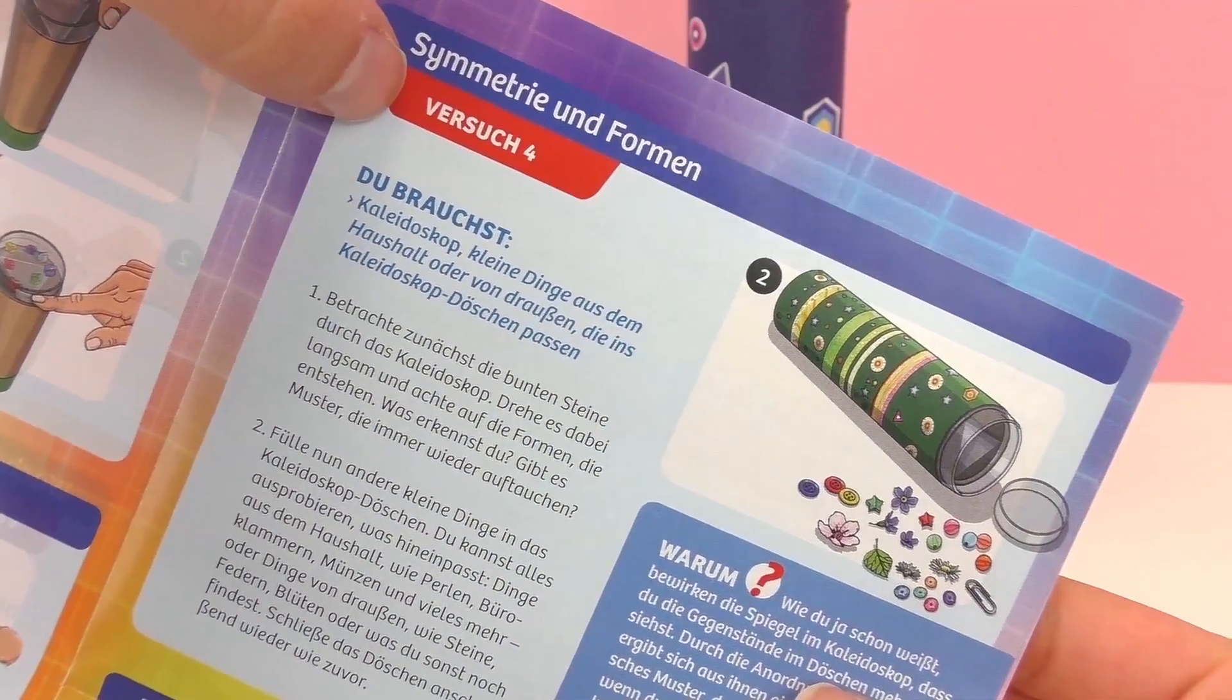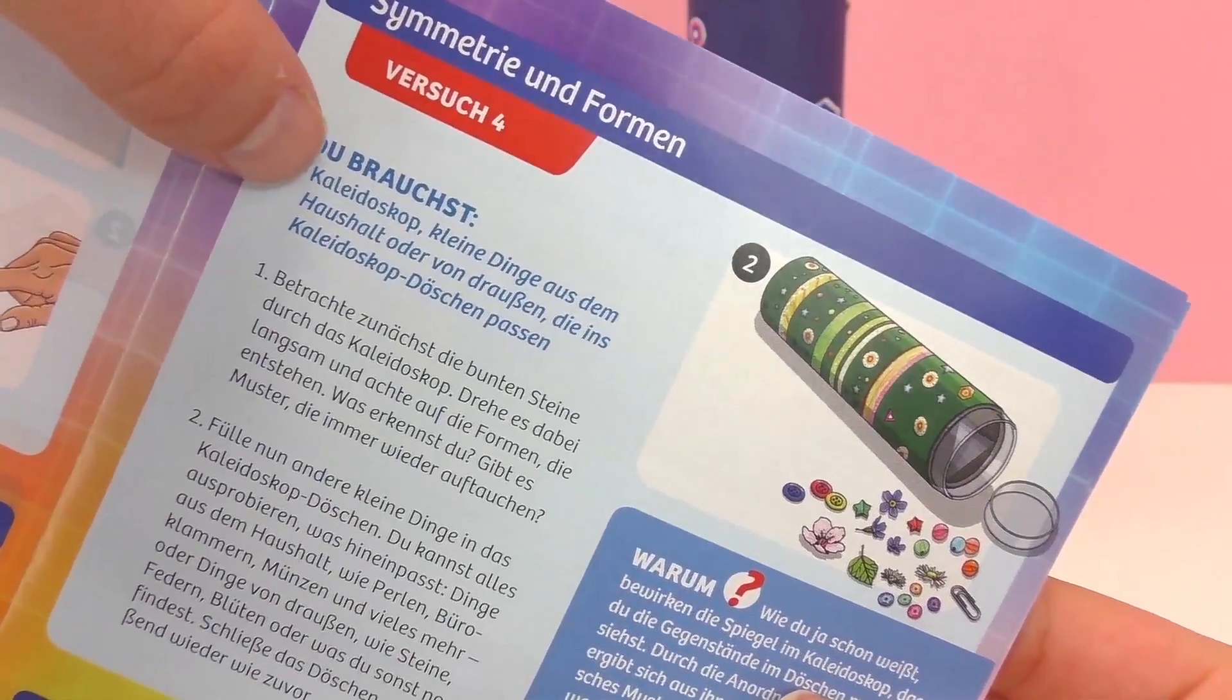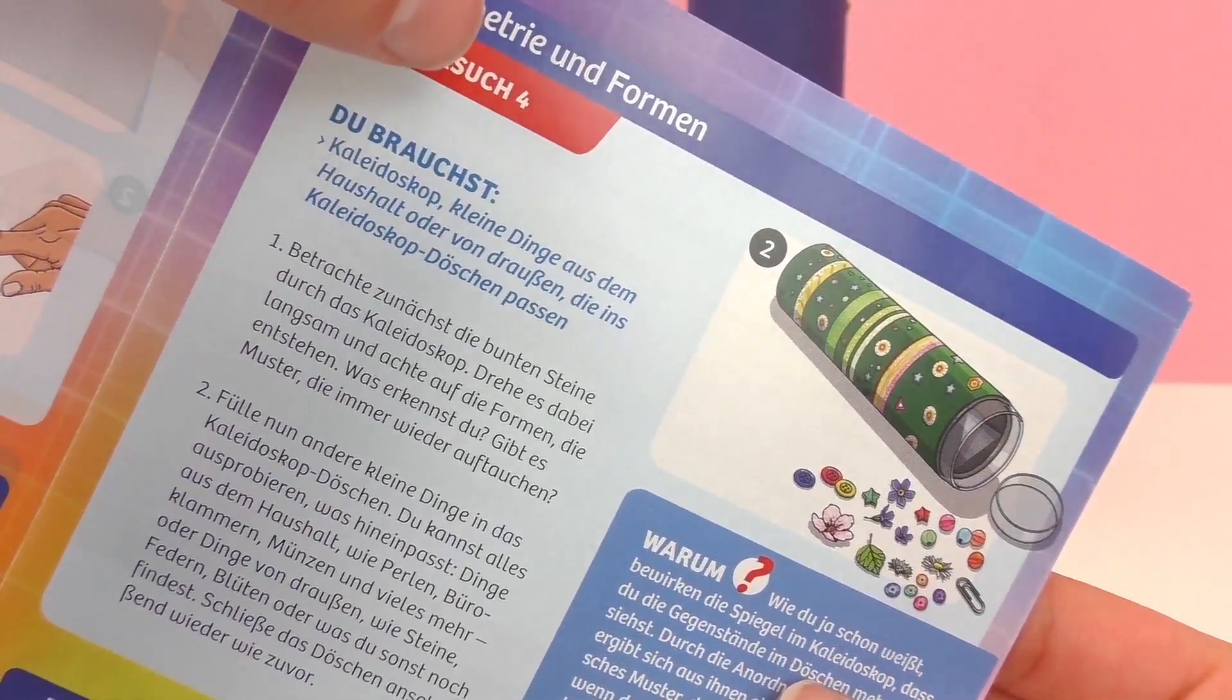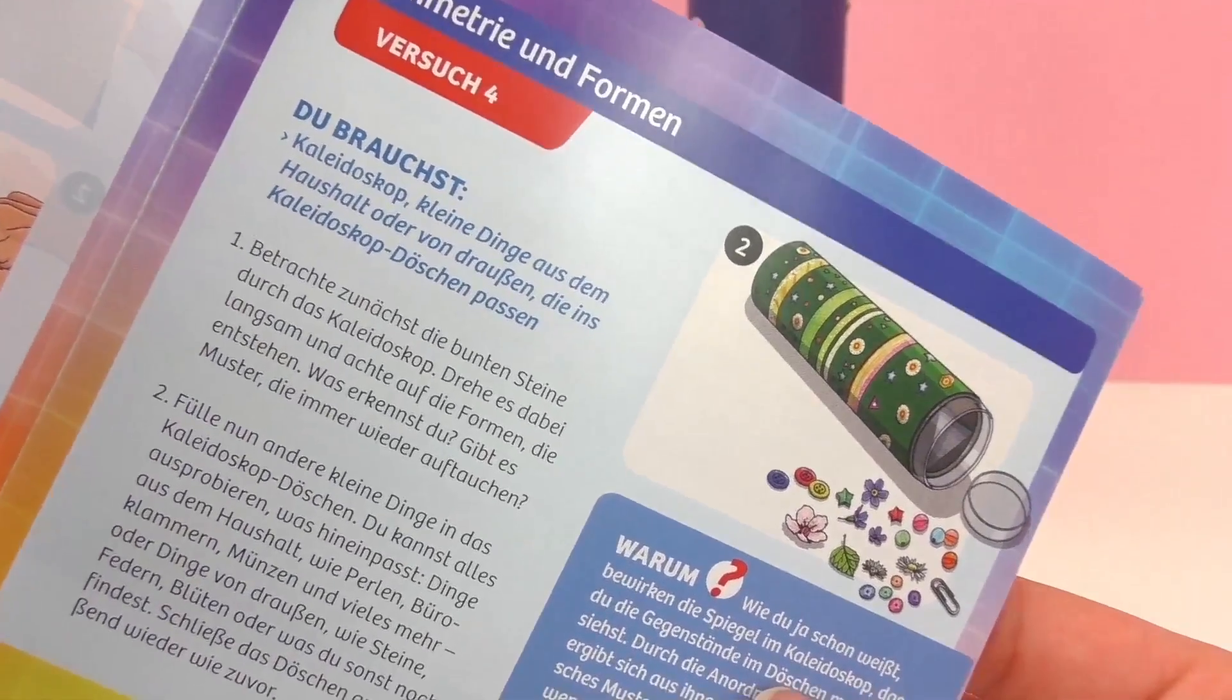So today we're going to be collecting small things from around the house as well as outside and using them to put inside the kaleidoscope and see how it looks. This is called symmetry and forms because the reflections of the images will create symmetry because of the mirrors and the different forms will be from different things you can find around the house and outside.